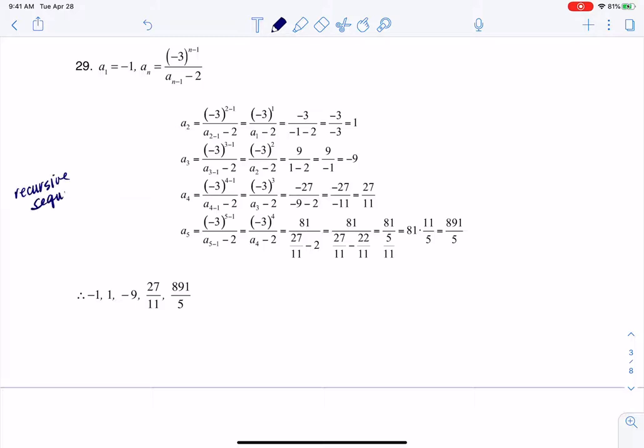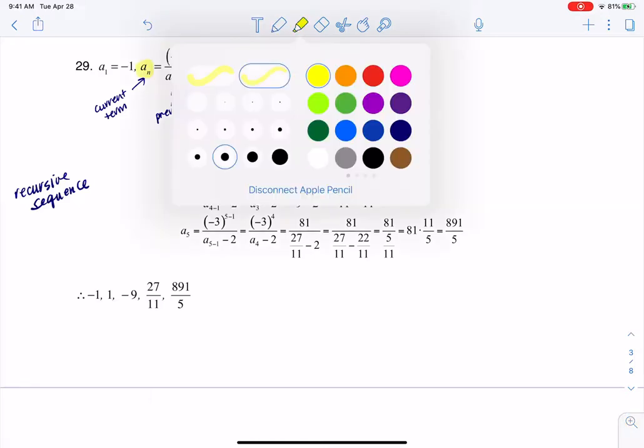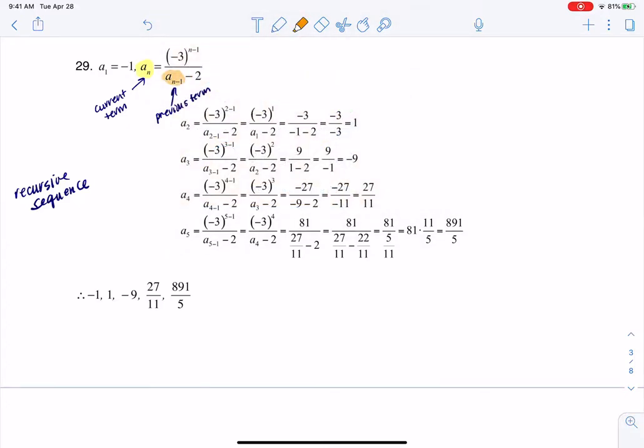The reason I know this is a recursive sequence is because our current term, a sub n, let me write current term, is being defined in terms of a previous term, a sub n minus 1. And whenever you have that situation where your current term is defined in terms of a previous term, we're recursing. That's what the re stands for, like we're going backwards.